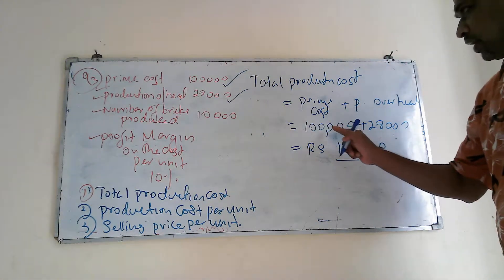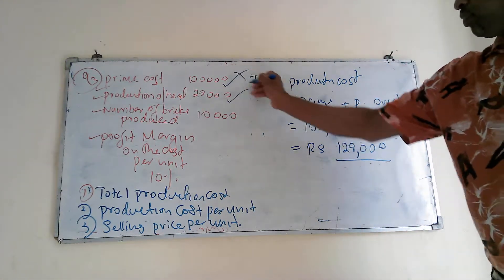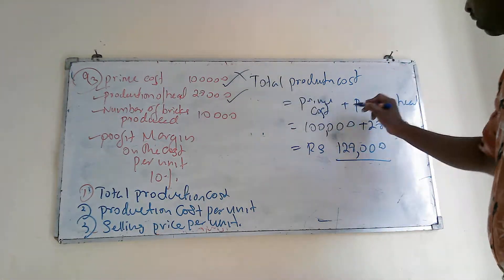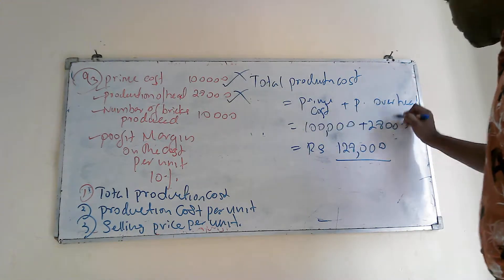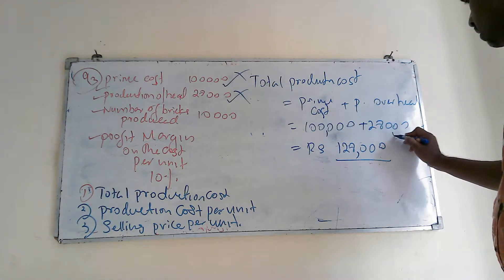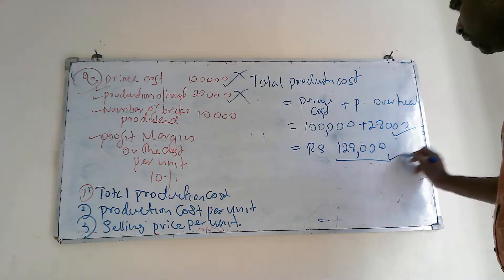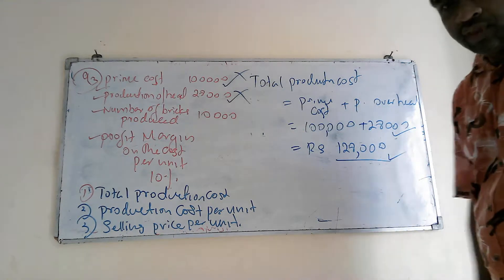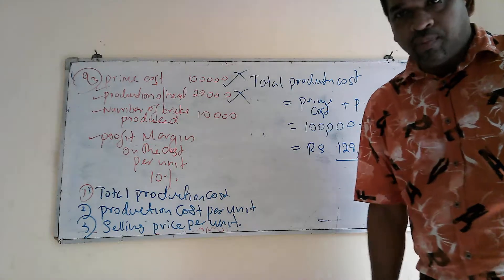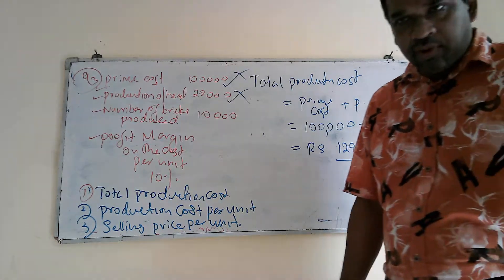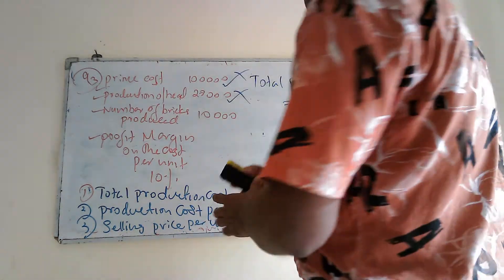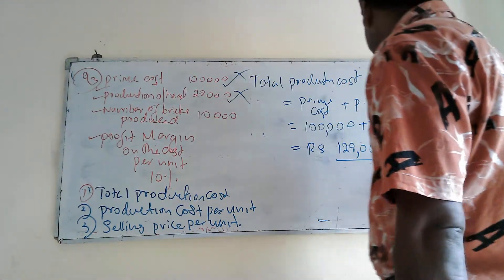Prime cost is 100,000 and production overhead is 20,000. That is the answer for Part A — the total production cost is 120,000.